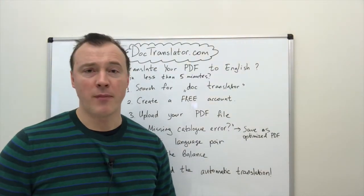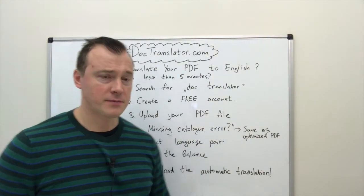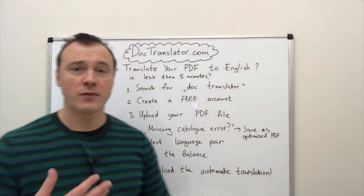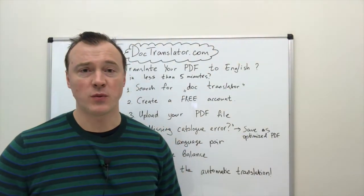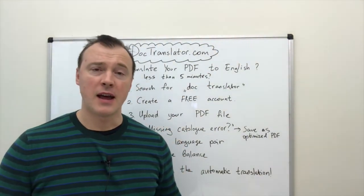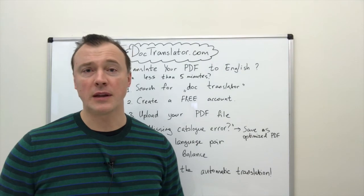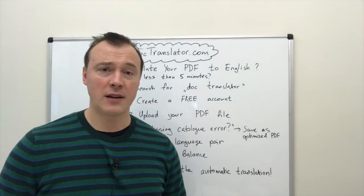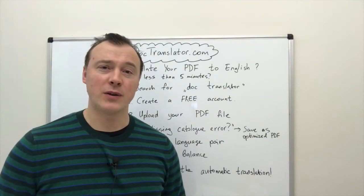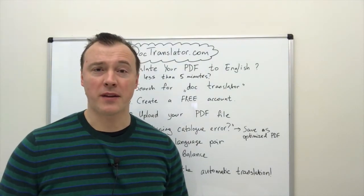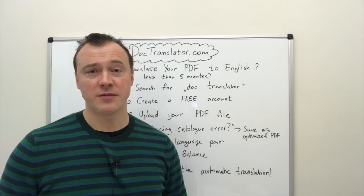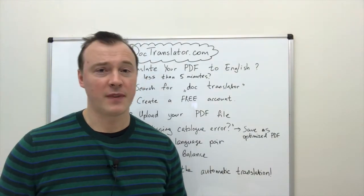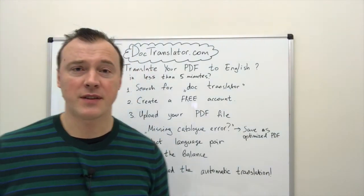Step number five: you will get the price estimate. You need to pay the balance, and once you pay, the translation will start and a download link will appear. Click on the download link and download your automatic translation to your desktop.